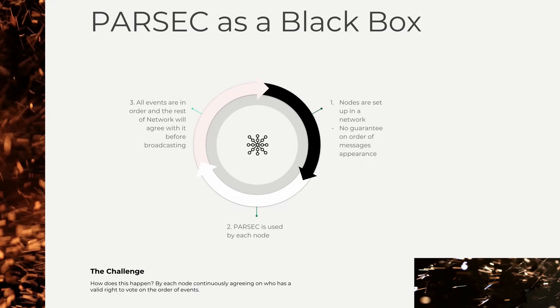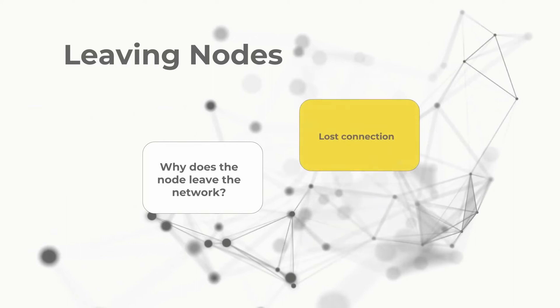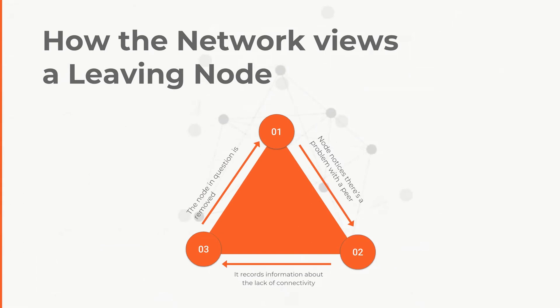Let's start by discussing what happens when a node leaves the network. This might happen for a number of reasons, such as a node losing its connection to the other members, or perhaps a node is voted out by the other nodes because it's being malicious. To keep things simple, let's consider lack of connectivity and malicious activity in the same way. When a node notices that there's a problem with a peer, it votes to highlight this problem — it records information about the lack of connectivity, for example, and shares it with other nodes in the expectation of reaching consensus. If the nodes then reach consensus, they all remove the node in question from the list of nodes involved in the decision process.